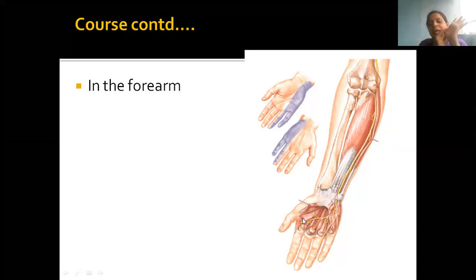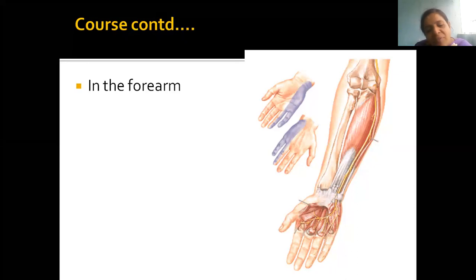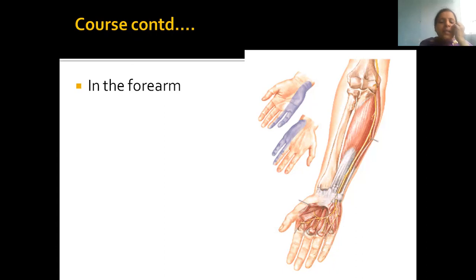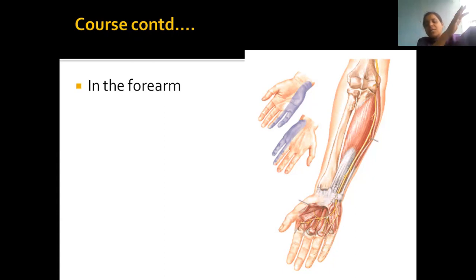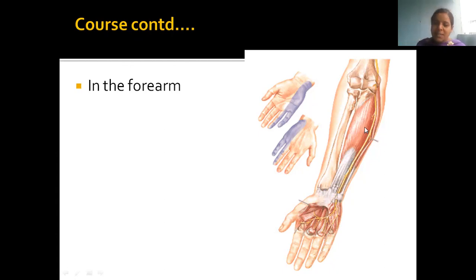In the palm, the ulnar nerve supplies the intrinsic muscles: the thenar group, hypothenar group, lumbricals, and palmar and dorsal interossei. The ulnar nerve is not intended to supply the arm or most of the forearm. Its basic function is to supply the palm. The exceptions in the forearm are flexor carpi ulnaris and flexor digitorum profundus.